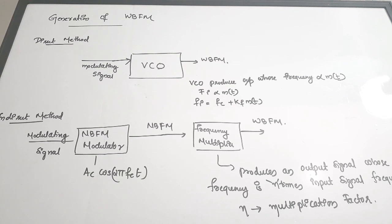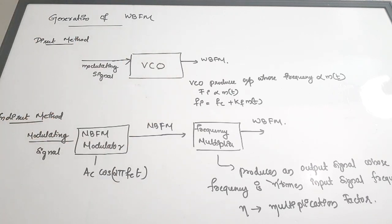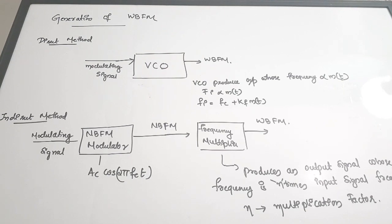There are two methods for generating wide band FM. The first is the direct method, where we use a voltage controlled oscillator to produce wide band FM. The second is the indirect method, where we use a narrow band FM modulator and then multiply the frequency, so the output becomes a wide band FM wave.